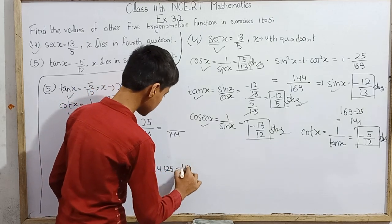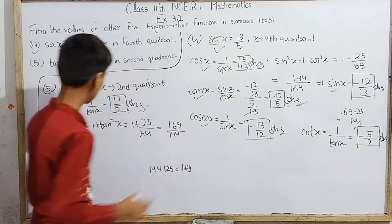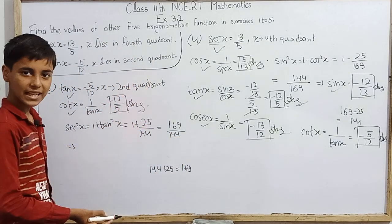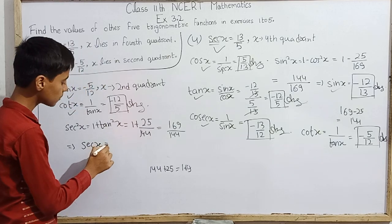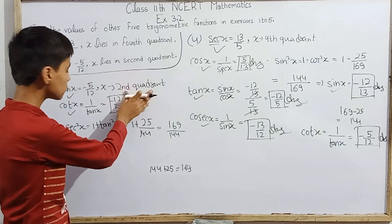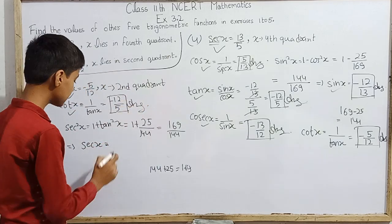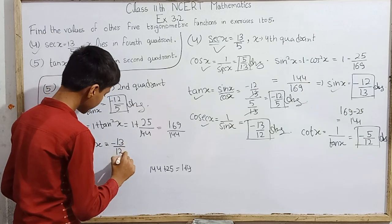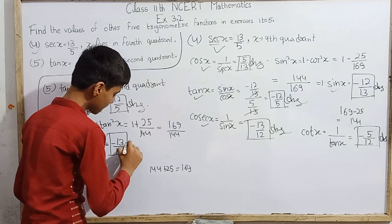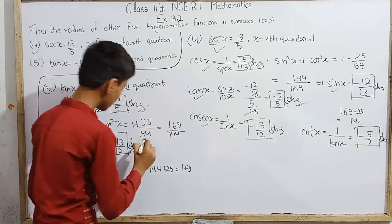So sec squared x equals 169 over 144, which means sec x equals plus or minus 13 over 12. Now, is it positive or negative? Since x is in the second quadrant, sec x is negative. So sec x equals minus 13 over 12. This is our answer.